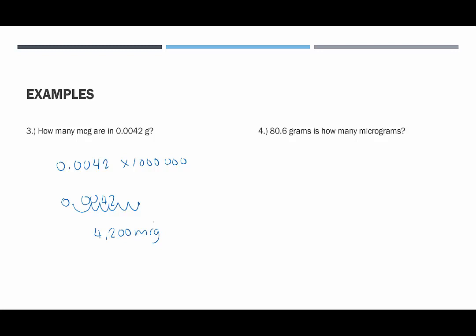How about 80.6 grams? 80.6 grams is how many micrograms? We would take 80.6 and multiply it by one million, which means we move the decimal point six places to the right — one, two, three, four, five, six — and we need to add zeros in these gaps. We're adding five zeros, so we would end up with 80,600,000 micrograms.